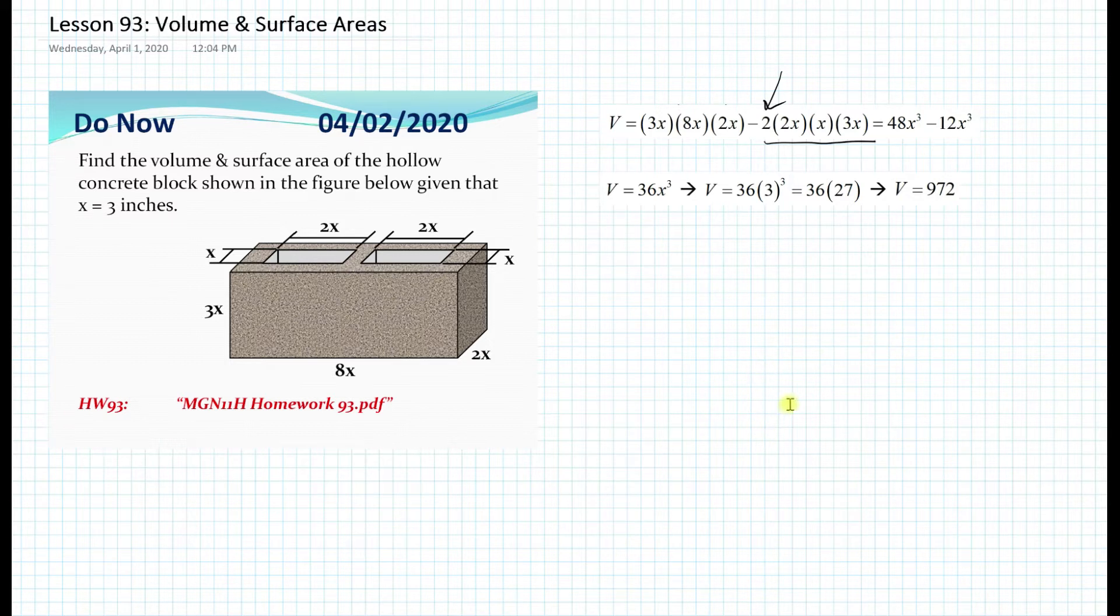Now, if we substitute 3 for x, the volume will be 36 times 3 cubed, which is equal to 36 times 27. And the final answer is just going to be 972. Keep in mind that volume has a unit of cubed units.